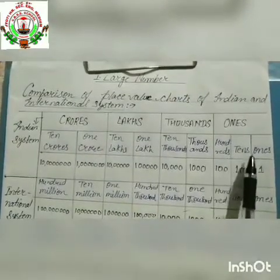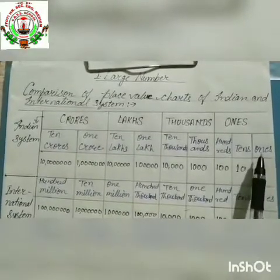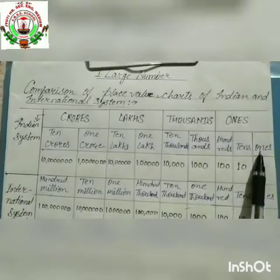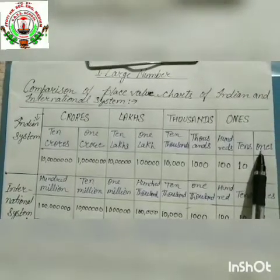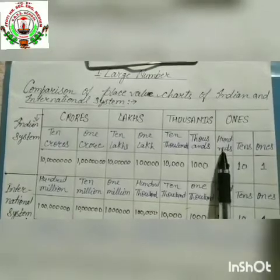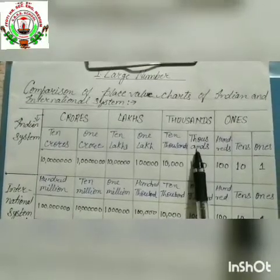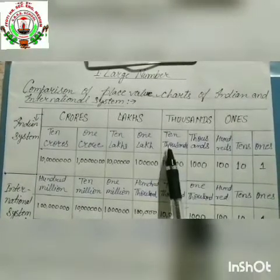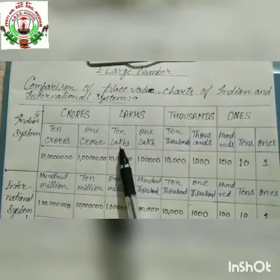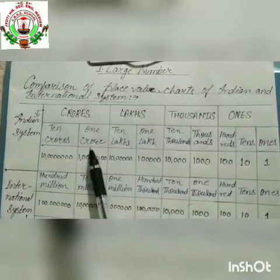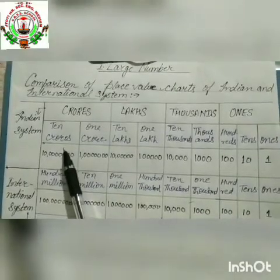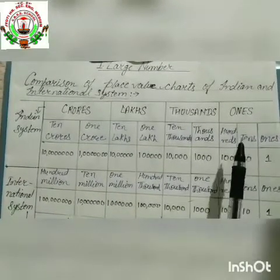The names of these places from the left are: ones, tens, hundreds, thousands, ten thousands, one lakh, ten lakh, one crore, and ten crores. This is the Indian system.